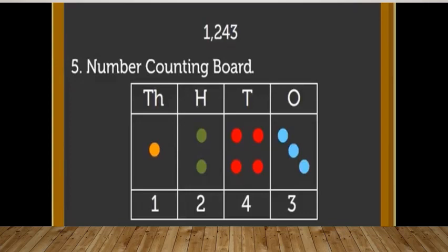The fifth way is by using the counting board. In the ones place we have 3, so we put three counters in the ones block, four red counters in the tens block, two green counters in the hundreds block, and one yellow counter in the thousands block. Again, this can be represented as 1243.